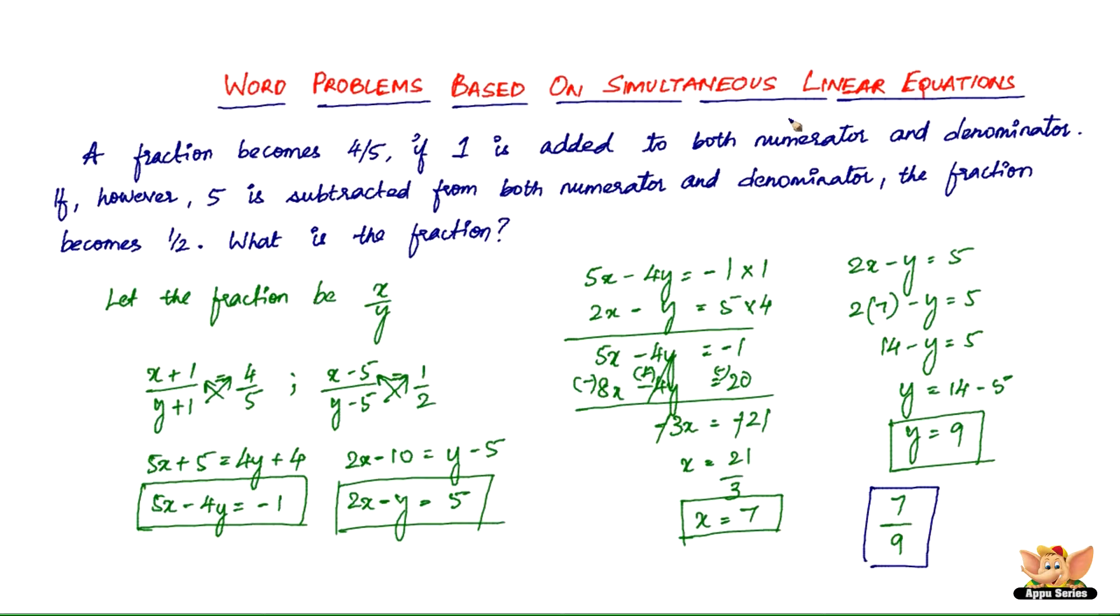So what you have to do is you first have to give identity to those unknowns in the form of alphabets. And then just do what they say. They say that if 1 is added to both numerator and denominator, you add that. You add 1 to both numerator and denominator. And they say it becomes 4 by 5. So you equate it to 4 by 5. And when they say that 5 is subtracted from both numerator and denominator, you subtract it. You subtract 5 from x and 5 from y. And that becomes 1 by 2. So that is all. This is done.